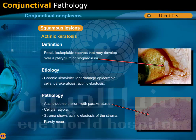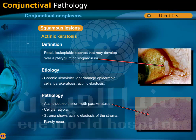Actinic keratosis presents as focal leukoplakic patches that may develop over a pterygium or pinguecula. It is caused by chronic ultraviolet light that damages epidermoid cells and causes parakeratosis and actinic elastosis. There is acanthotic epithelium with parakeratosis, cellular atypia, and actinic elastosis of the stroma, and it rarely recurs.